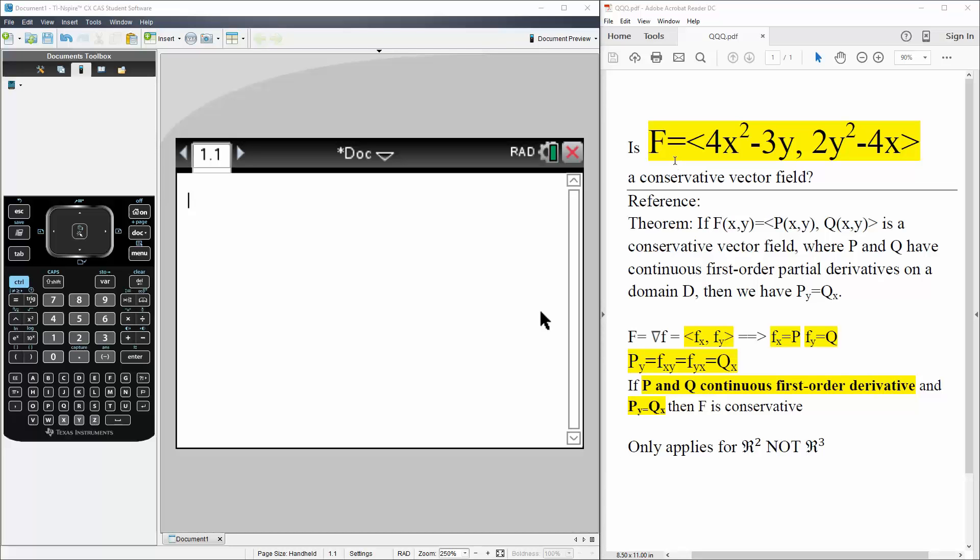Okay, in this problem we want to know if the vector function 4x squared minus 3y, 2y squared minus 4x is a conservative vector field.